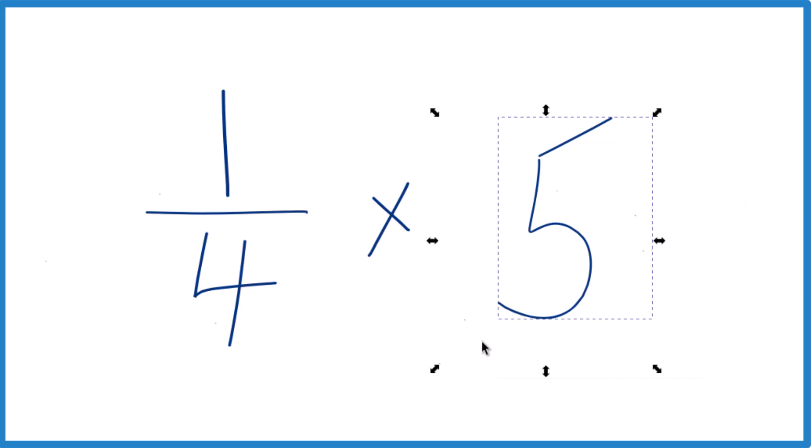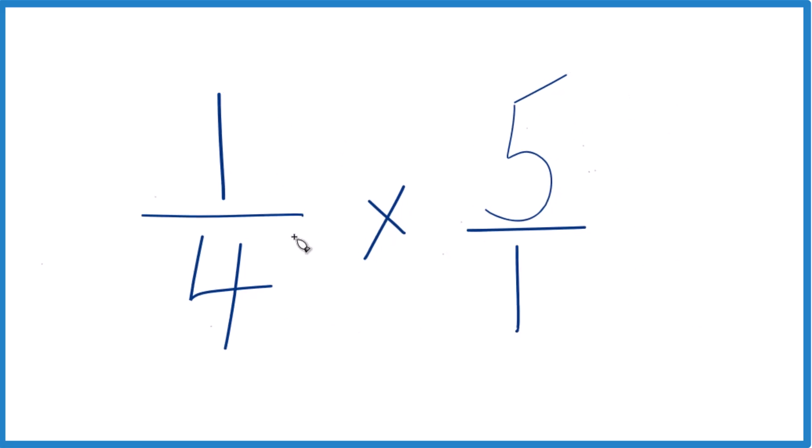And we can take the 5 here and we can call this 5 over 1. 5 over 1 is the same as 5, but now the numerators line up and the denominators line up very nicely. And with multiplying fractions, we're going to multiply the numerators and then the denominators.